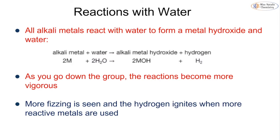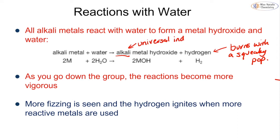When alkali metals react with water, we form a metal hydroxide and hydrogen gas. You can test that the gas is hydrogen because it burns with a squeaky pop. The metal hydroxide is an alkali and you can test that using universal indicator — you should see a blue or purple color form. As you go down the group from lithium to sodium to potassium, the reactions become more vigorous. For potassium, the hydrogen is produced so rapidly and with such a high temperature change that it actually ignites.